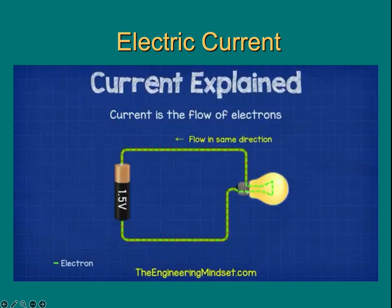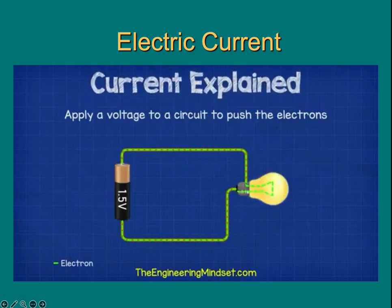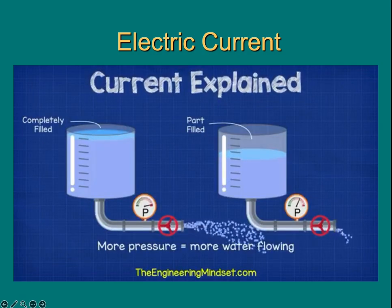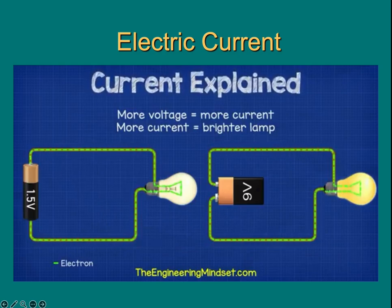For us to make use of this, we need lots of electrons to flow in the same direction along the circuit. We can then place things like lamps in the way of these electrons so that they flow through it and then they generate light and heat. To do this, we need to force the electrons to move and we can do that by applying a voltage. Voltage is the pushing force, it's like pressure in a water pipe. The more pressure we have, the more water can flow. The more voltage we have, the more electrons can flow.